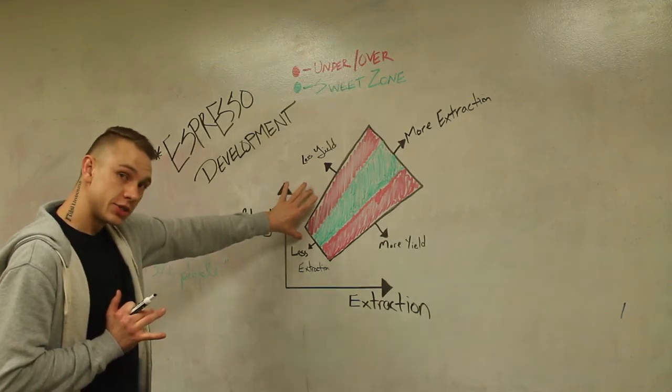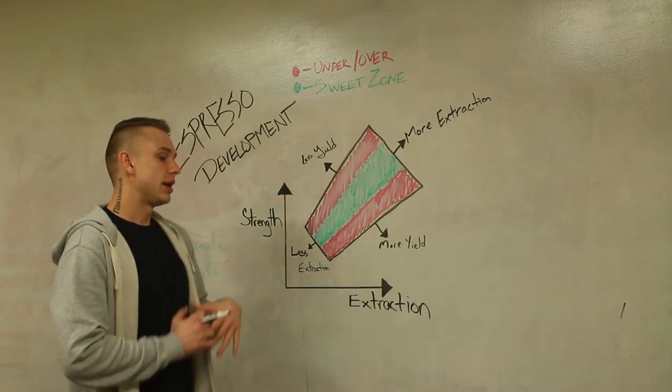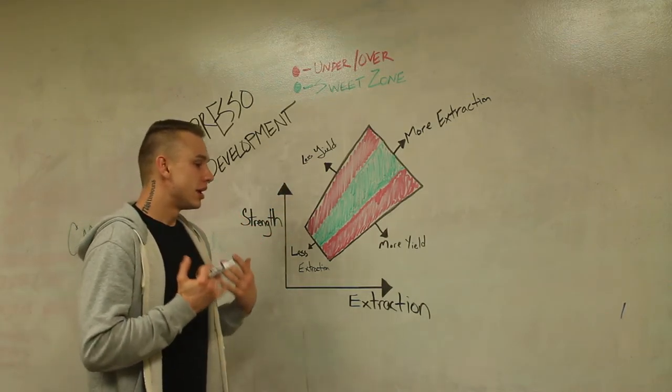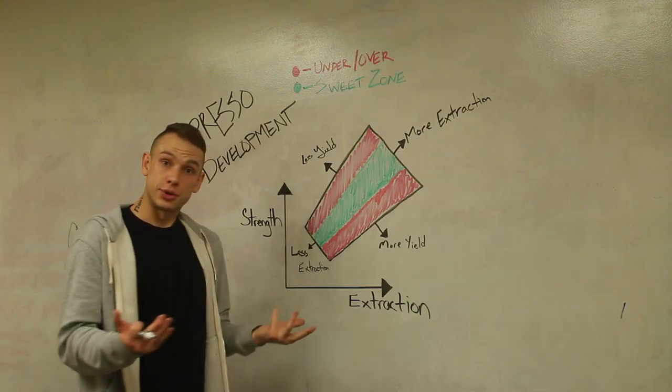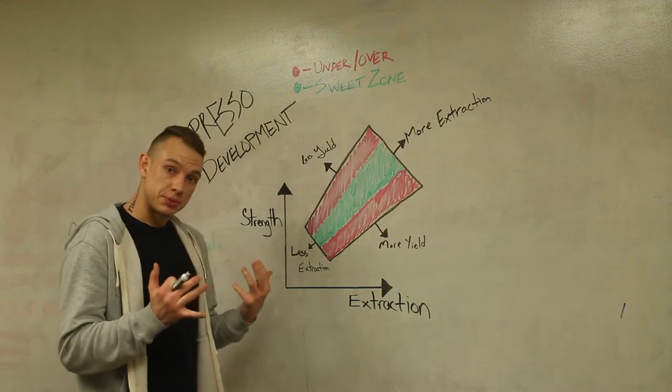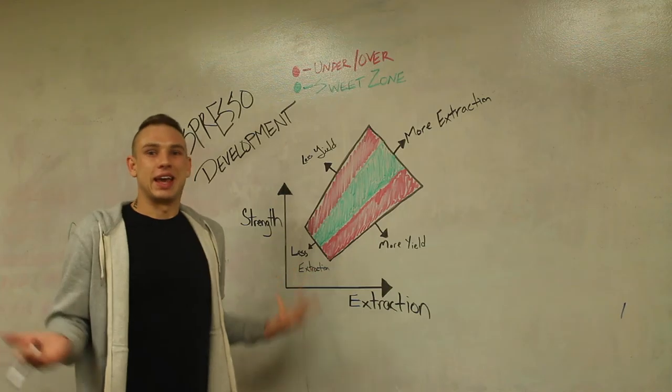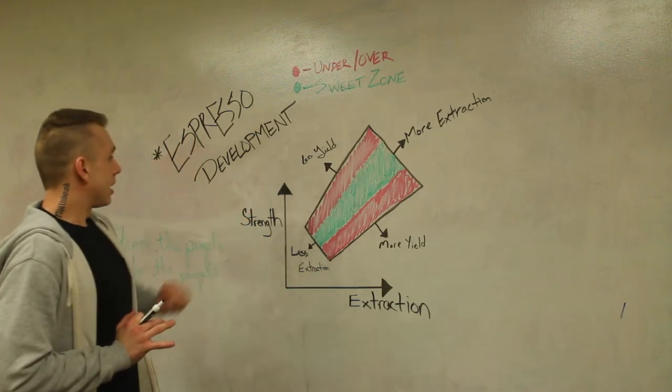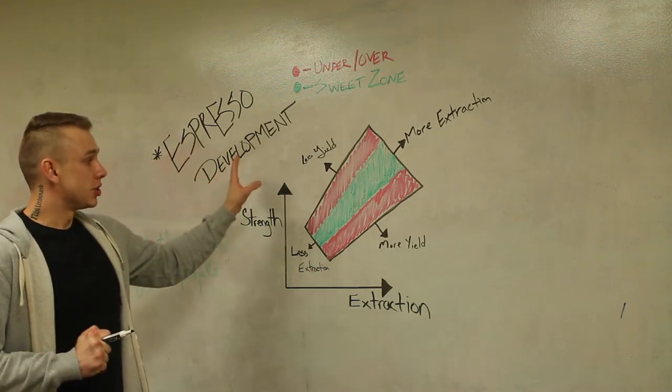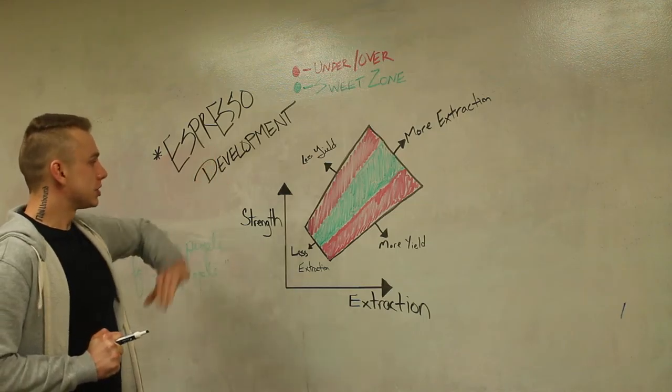That stronger area is going to produce a less yield, not as much of a yield. It's going to be a more concentrated shot so that can go ahead and actually shine through in the milk or the syrups so that this doesn't really get cancelled out.